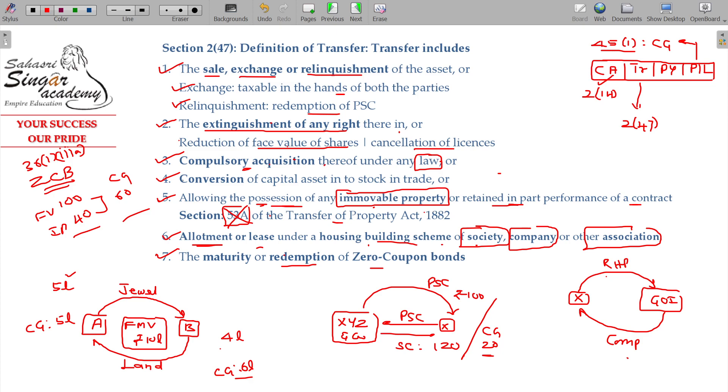So almost 7 items are there under Section 2 Class 47 being transfer: sale, exchange, relinquishment, extinguishment of any right, compulsory acquisition, conversion of capital asset into stock, and immovable property. As per the Transfer of Property Act, the lease allotment case in case of society and housing, house building scheme company or association, and the allotment or lease could be transferred. Finally, zero coupon bond redemption or maturity will also be considered as transfer.